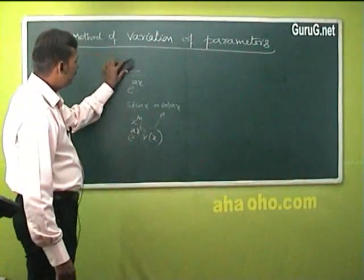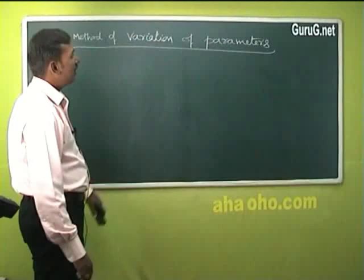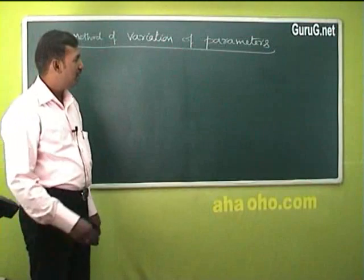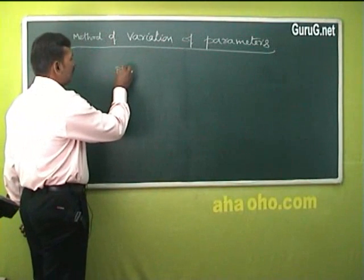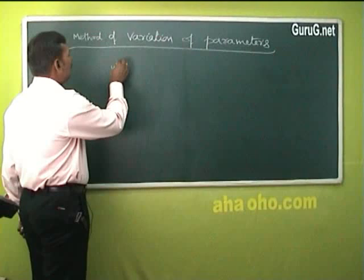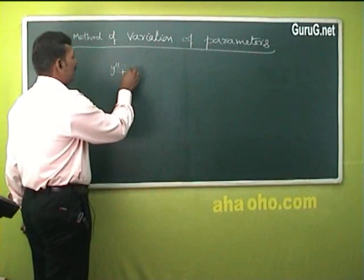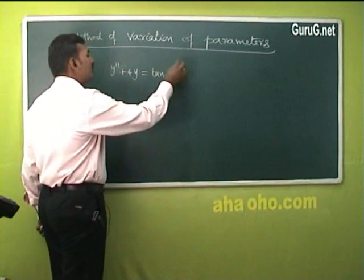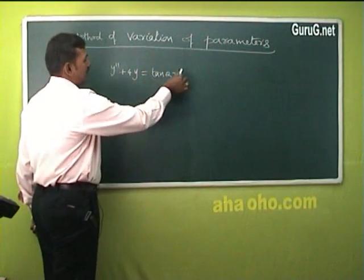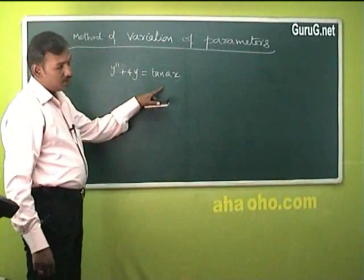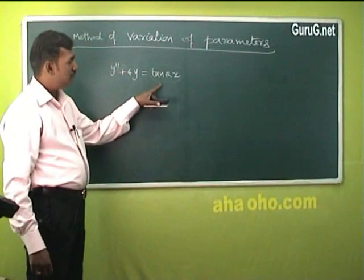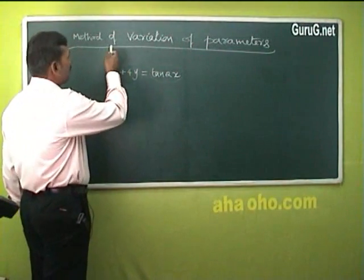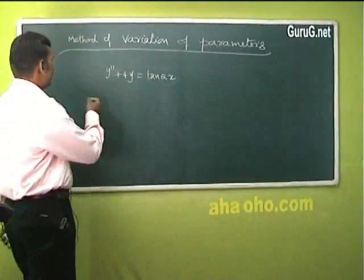Now we are going to study the method of variation of parameters. What is the necessity for studying this method? Suppose we have a particular integral — for example, y'' + 4y = tan(2x). There is no rule for finding a particular integral for the type tan(2x), which is why we apply the method of variation of parameters.